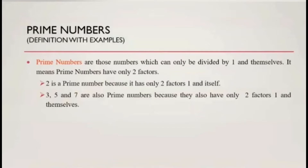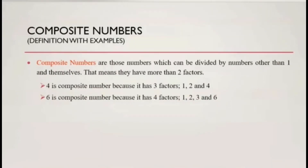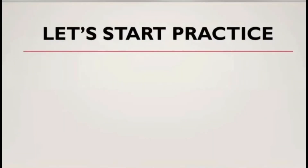Composite numbers are those numbers which can be divided by numbers other than one and themselves — that means they have more than two factors. Four is a composite number because it has three factors: one, two, and four. Six is a composite number because it has four factors: one, two, three, and six.